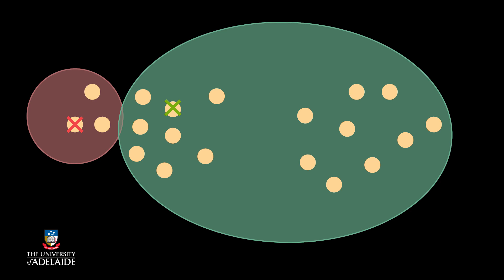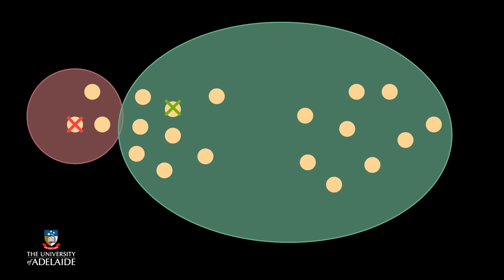The first step is to then assign each data point to its nearest centroid. The second step of the algorithm is to update the centroid position of each cluster according to the points of each cluster. The new centroid now becomes this.